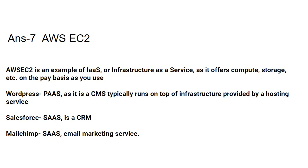AWS EC2 is an example of Infrastructure as a Service as it offers compute, storage, and many more services, charging you on a pay-as-you-go basis depending on the type and amount of services used. WordPress is a CMS that runs on top of infrastructure provided by a hosting provider — that is why it is Platform as a Service. Salesforce (a CRM) and Mailchimp (an email marketing service) are both Software as a Service, selling their software as a service that users can customize.